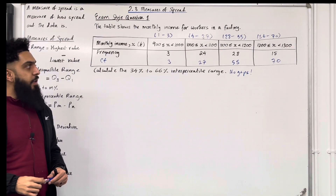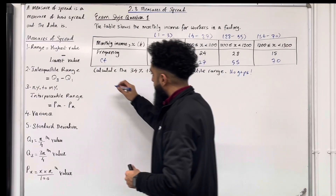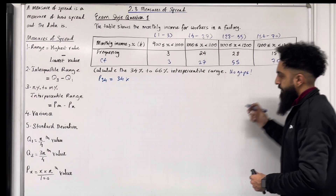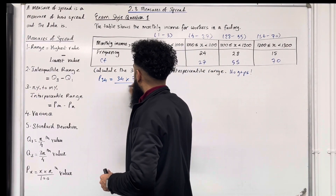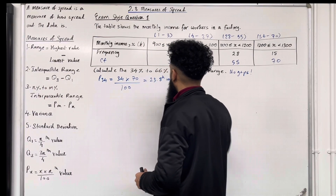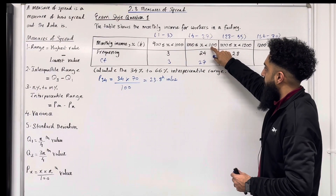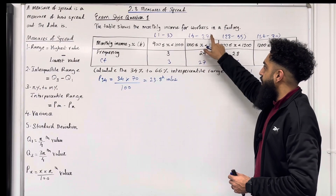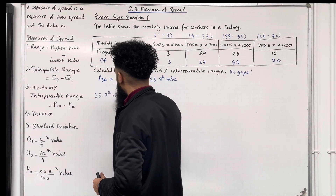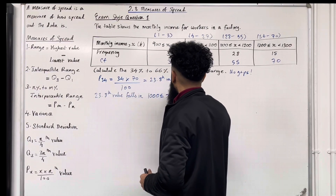Now we're ready to apply linear interpolation. Let's start by calculating P34, the 34th percentile. P34 is equal to 34 multiplied by the sample size 70, divided by 100. This gives me the 23.8th value. Now the 23.8th value falls in the class interval 1000 to 1100, because 23.8 is between 4 and 27.